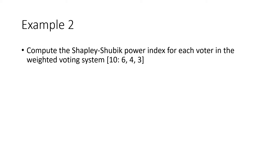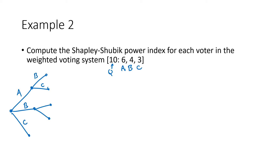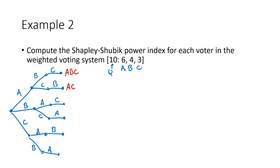Let's work through another example from start to finish — a three-voter system with quota 10 and voters A, B, and C. With three voters, the tree diagram is more manageable. A, B, or C could be first. If A is first, then B or C is second; if B is first, then A or C is second; if C is first, then A or B is second. The remaining voter fills third place. This gives us six permutations: ABC, ACB, BAC, BCA, CAB, and CBA.